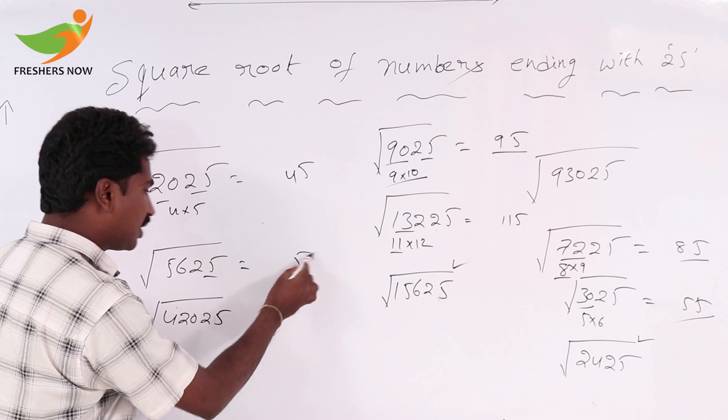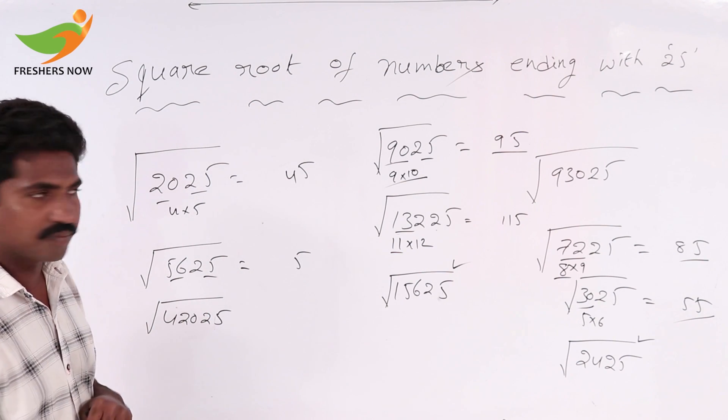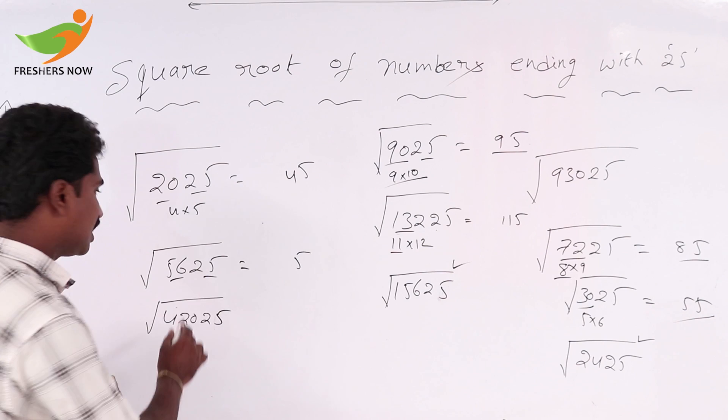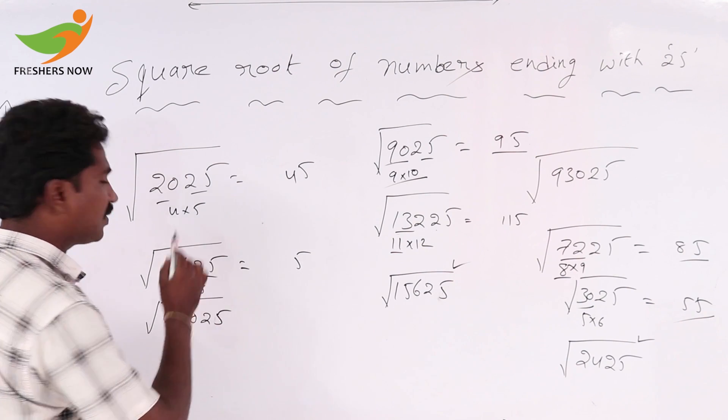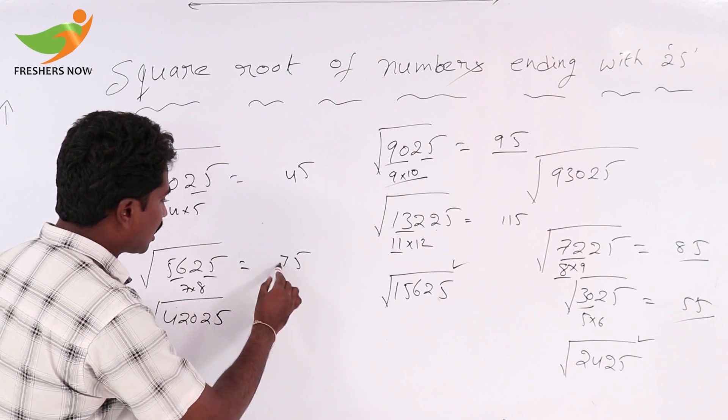5625, 25 is 5. 56, 7 x 8 is 56. Small number 7.